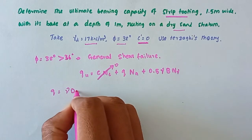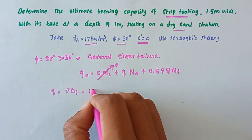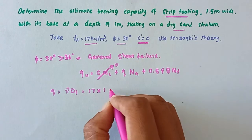q = γ·Df. So the gamma value is 17 into depth of foundation is 1 meter, equal to 17 kN/m².